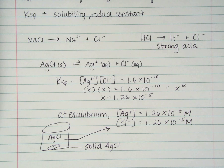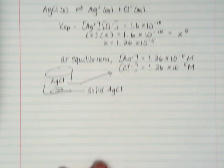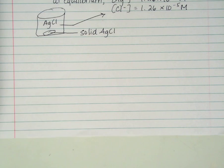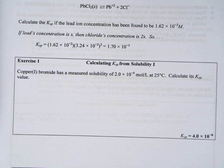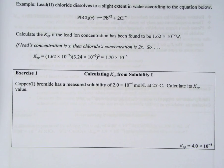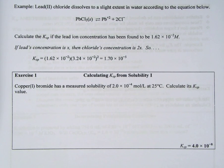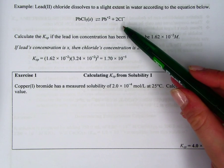So the trickiest part, however, is not one that's quite as easy as this one. So we're going to take a look at the first problem in your packet, which looks like this. So it gives you an equation. Lead 2 chloride dissolves to a slight extent in water according to the equation below.